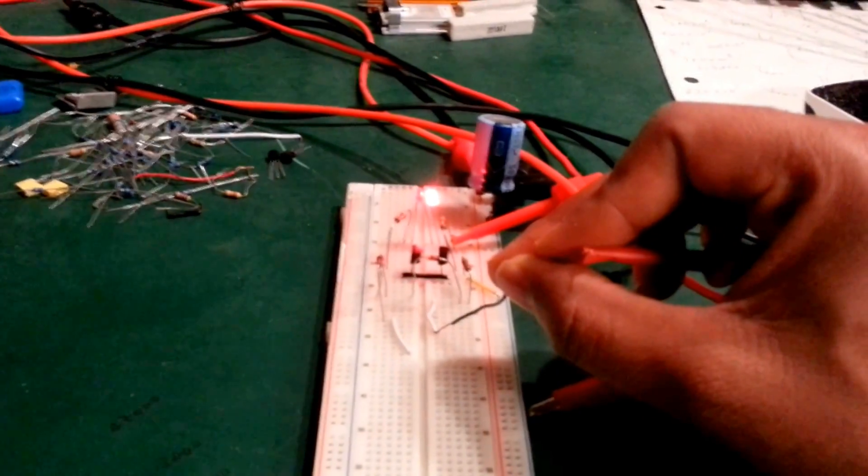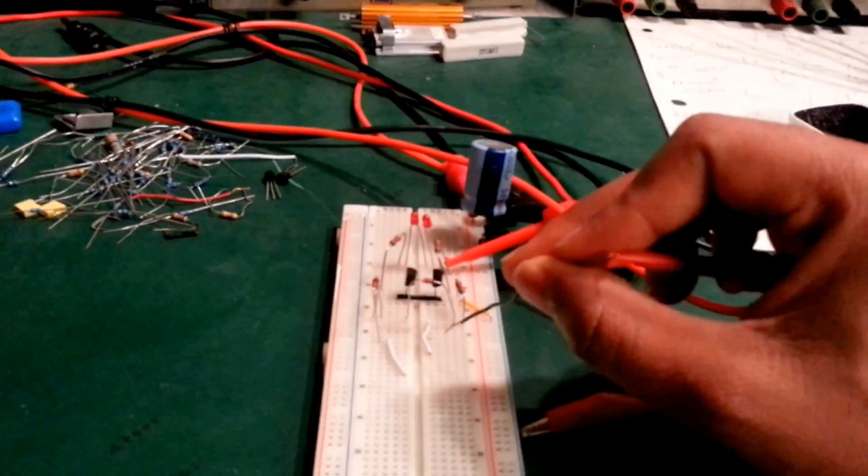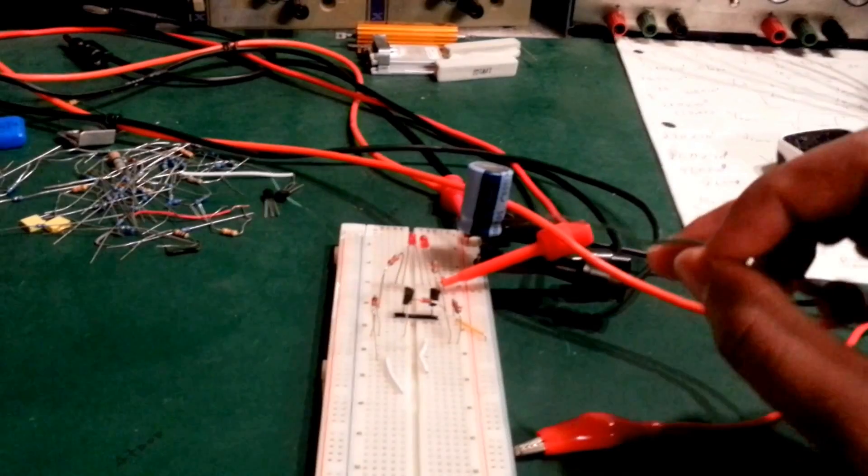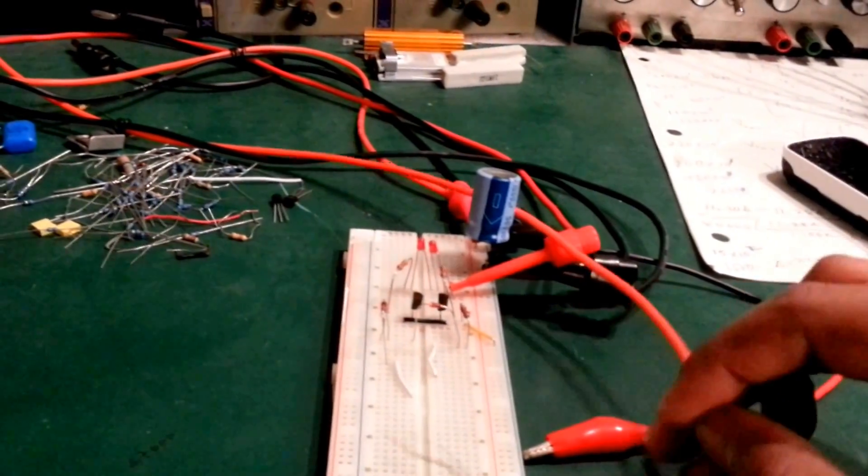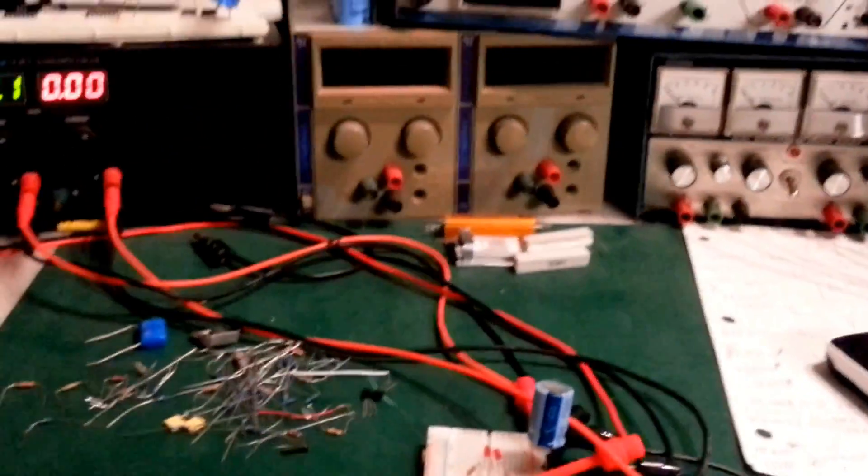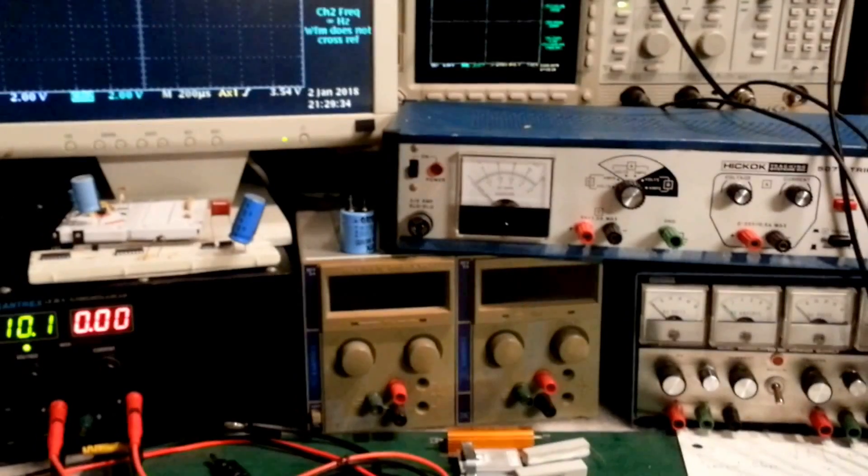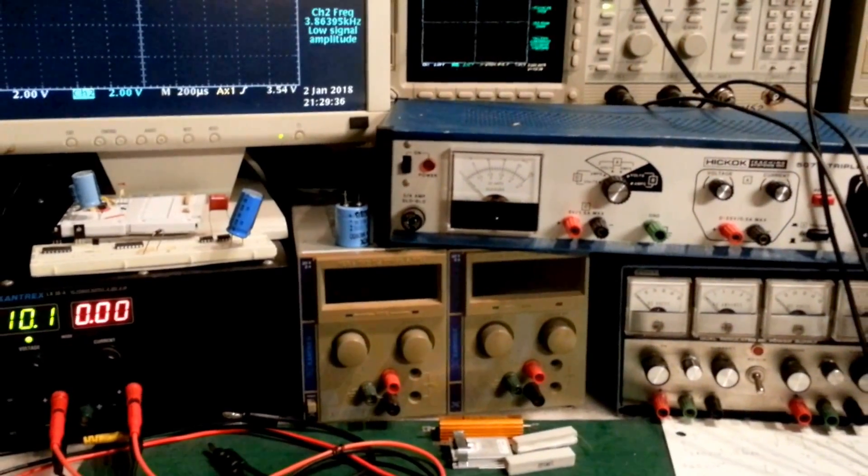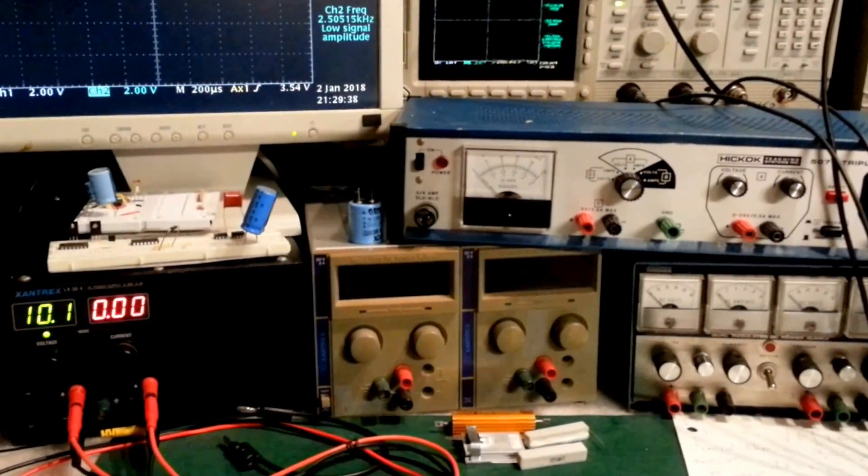So that's basically the solution to question 1 of chapter 2, the exercises on transistors, bipolar junction transistors from the Art of Electronics. I hope you have enjoyed this video, and I will try to do the other 8 questions as soon as I get time. Thank you, have a good day.